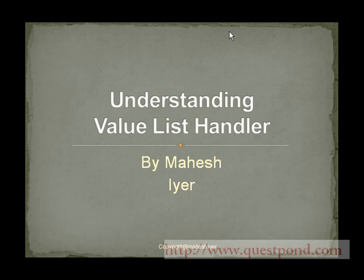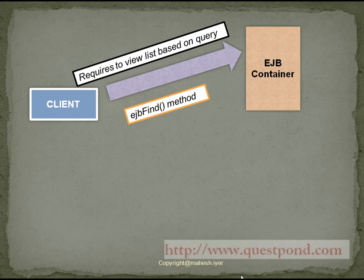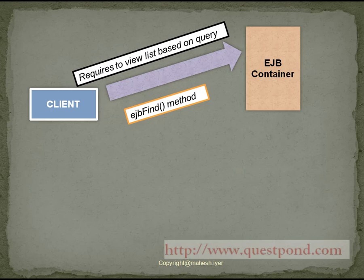Let us understand the value list handler design pattern. In web applications, many times the client requires to view a list based upon some query — for example, search via some name, address, etc. If the application is making use of EJB, then the client will make use of the EJB find method to get the required object references. The implementation of the EJB find method differs from container to container.